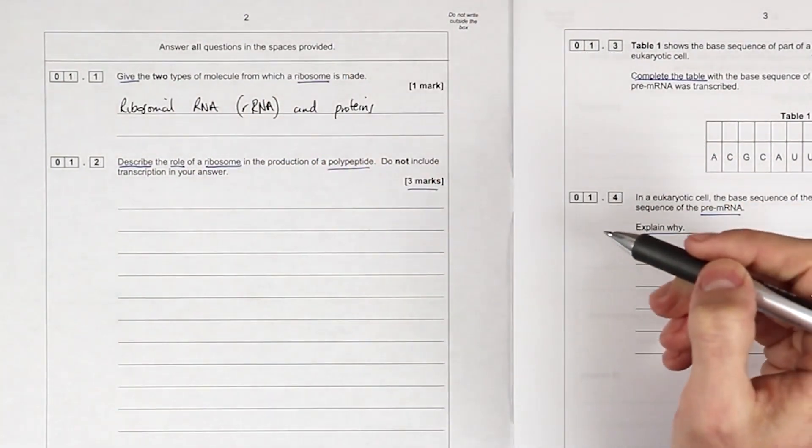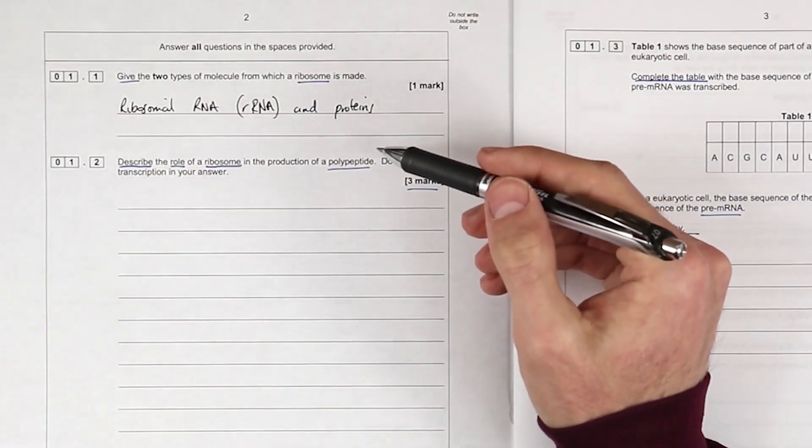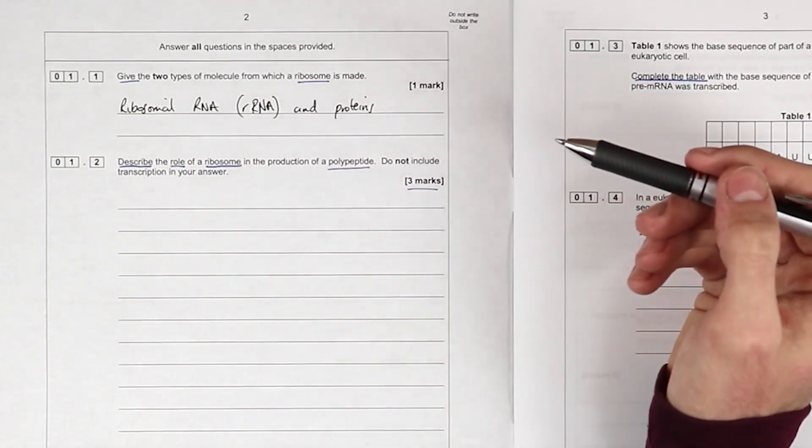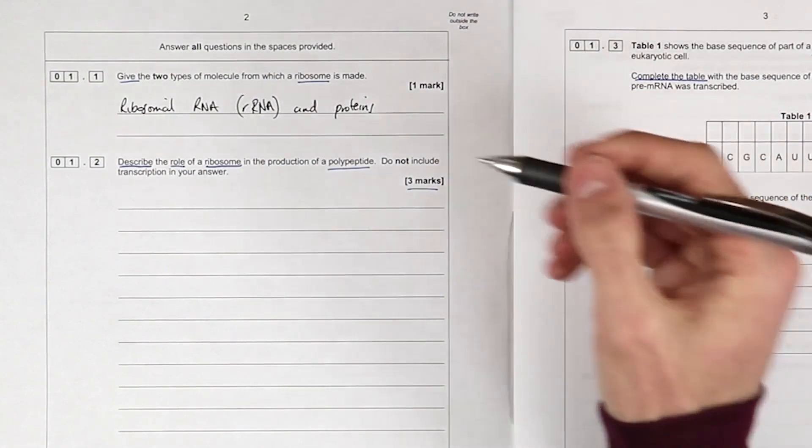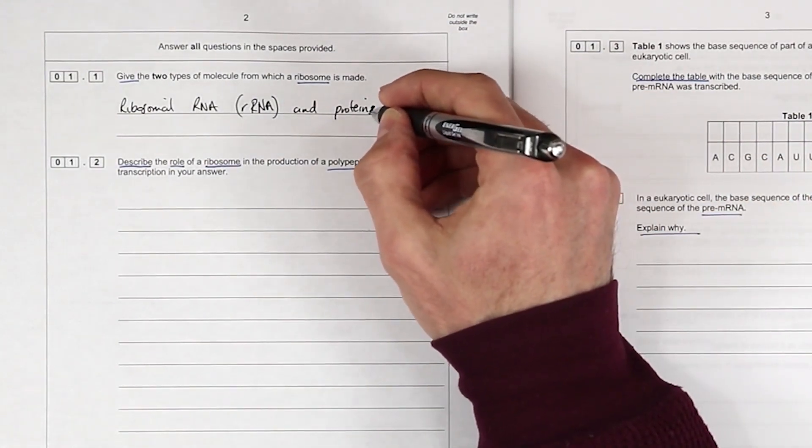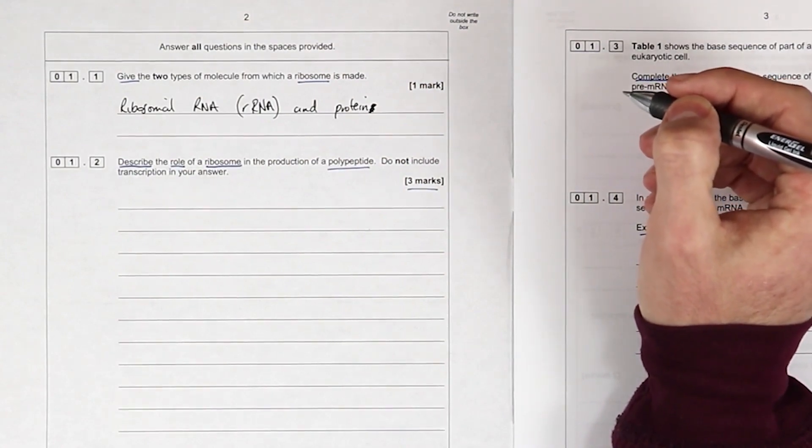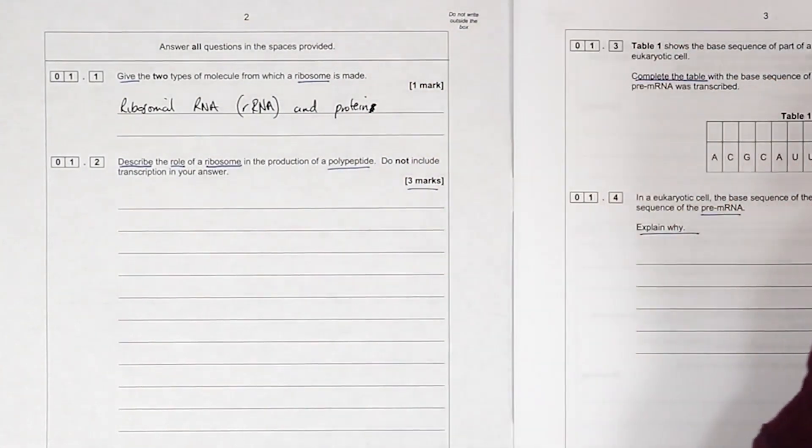It says a ribosome, or do I put the s? How many proteins are involved? You could probably say polypeptides. I think that's going to be okay for the mark. Protein can technically be a plural, you can talk about protein collectively, so I'm going to just get rid of the s. I feel it's safer that way.